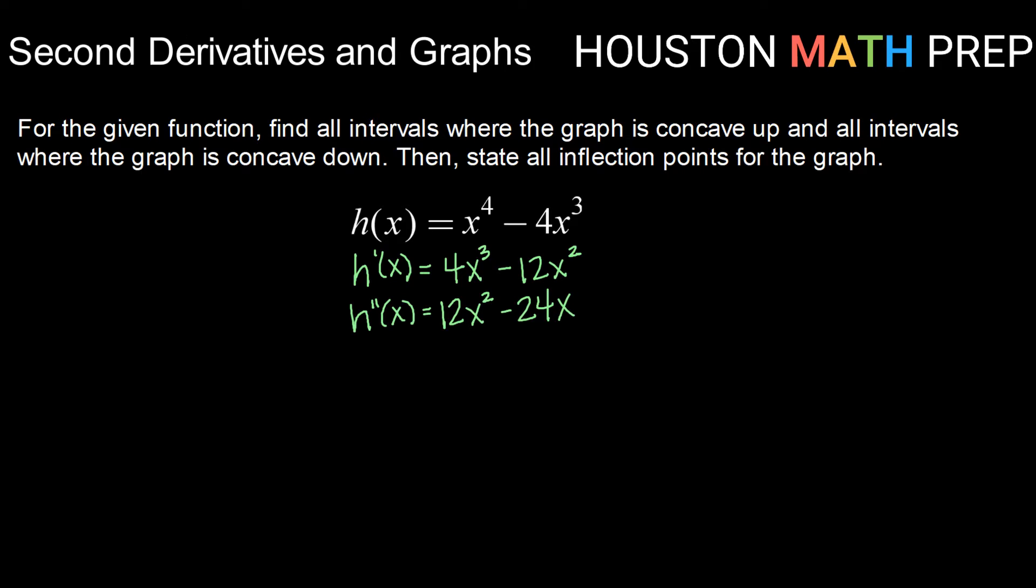So we want to find critical points of that, which, just like the first derivative, critical points come from where this is 0 or where this is undefined. Because this is a polynomial, quadratic polynomial here, this will not be undefined, so we're going to focus first just on where it is 0. So I can factor out a common factor of 12x. That leaves me with x minus 2. So I have two critical points here, and those are x equals 0 and x equals 2.